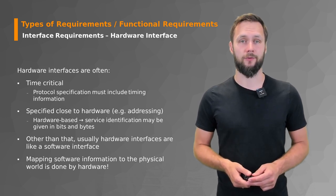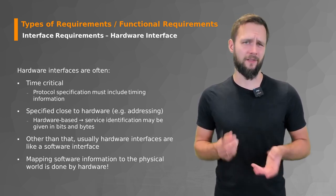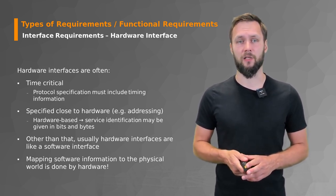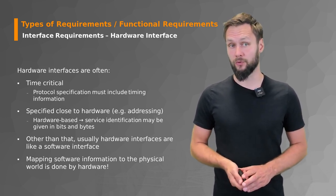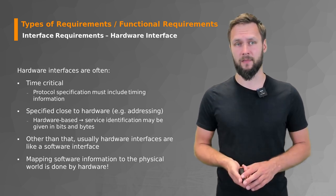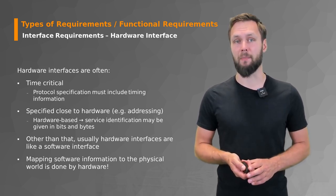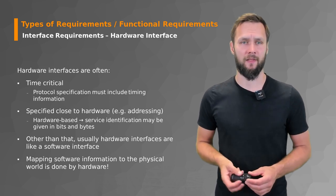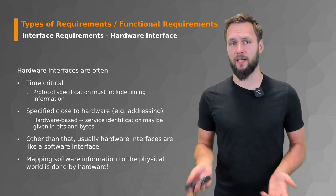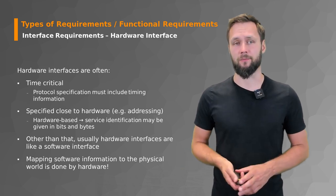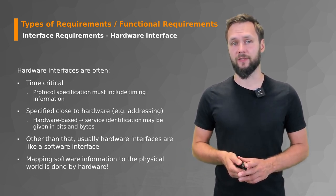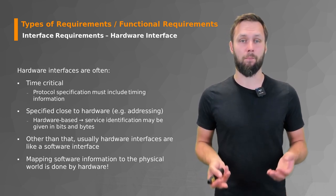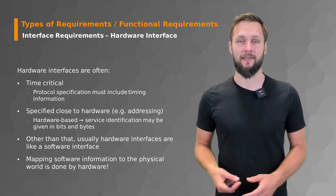Finally, we also have to consider hardware interfaces. These are special because they are often time-critical, where protocol specification must include timing information. They also often specify things close to hardware — for example, hardware-based service identification may be given in bits and bytes, which is completely different from a web interface. Generally hardware interfaces are similar to software interfaces but with special properties. Mapping software information to the physical world is done by hardware — there is no other way to get to the real world.